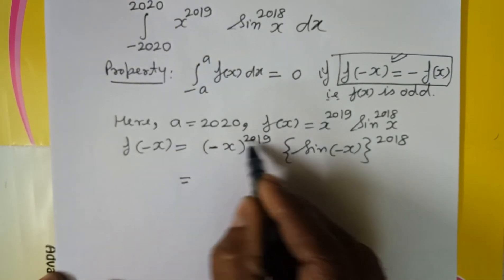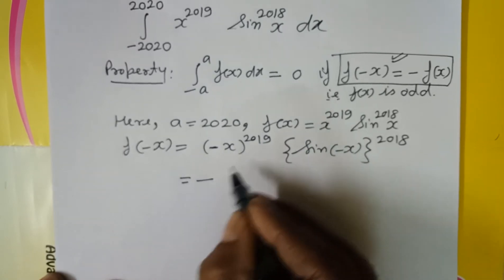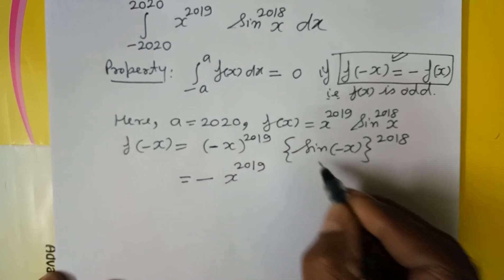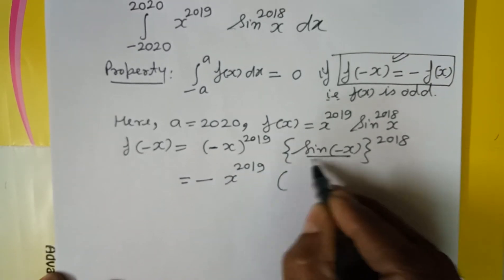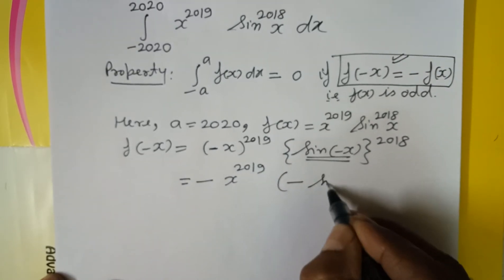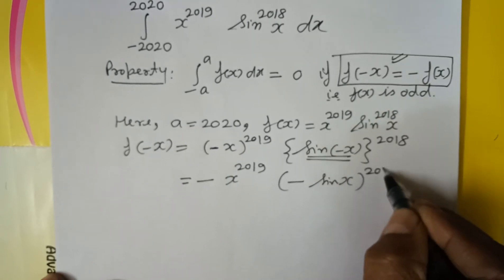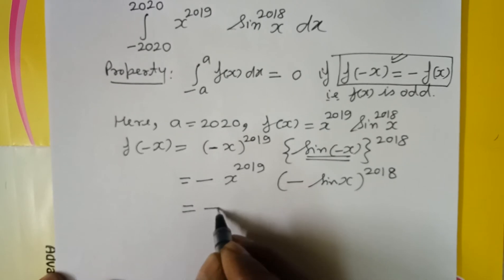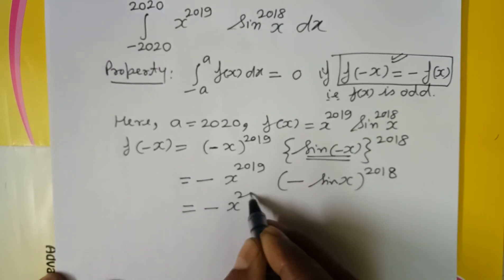Minus to an odd power is minus, so we get minus x to the power 2019. Sin of minus x is minus sin x, and the power is 2018.